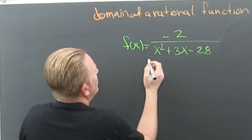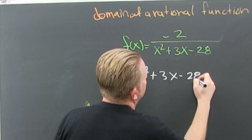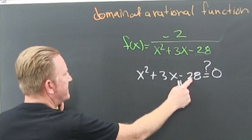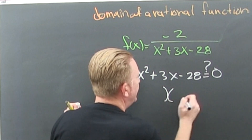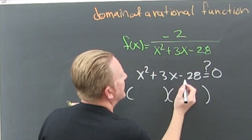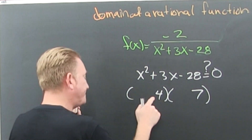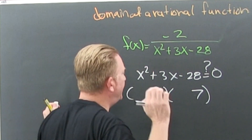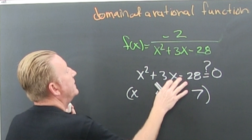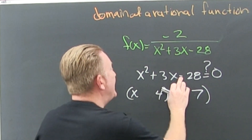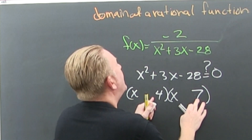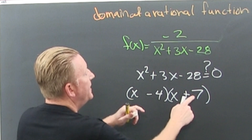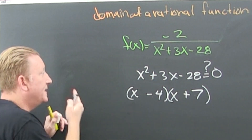So you go and look at the denominator: where is it equal to zero? Looking like the factors of 28 that subtract to be three — that's seven and four. Why? Four times seven is 28, and seven minus four is three. How do we assign the signs? They need to be opposite signs because when they multiply, they need to be negative. After we add them, they need to be positive. So that's a positive seven and a negative four, because seven minus four is a positive three.